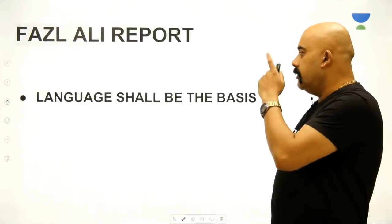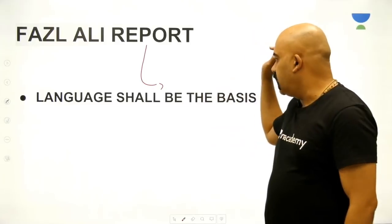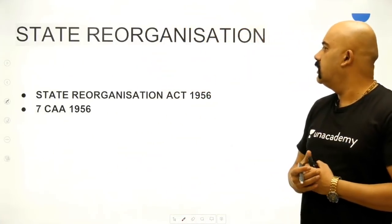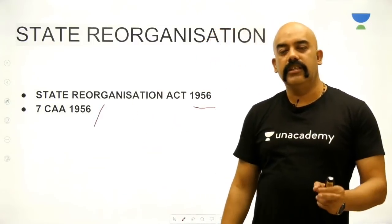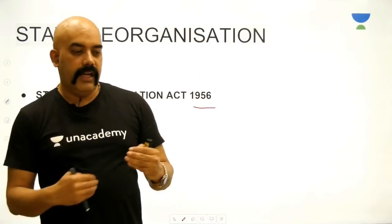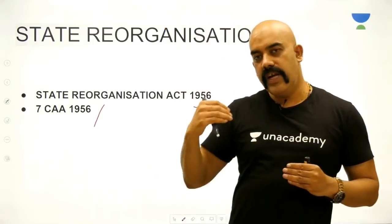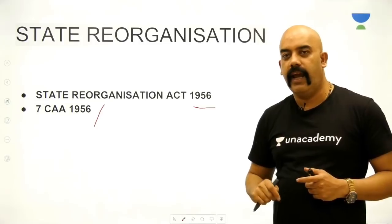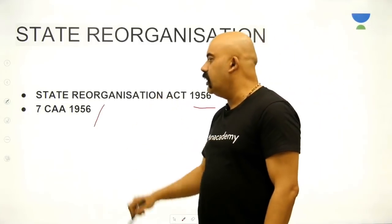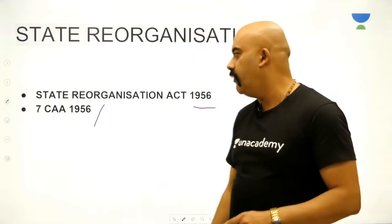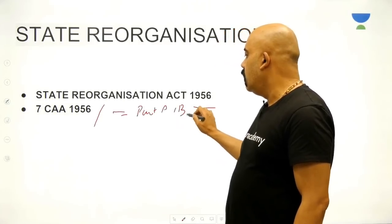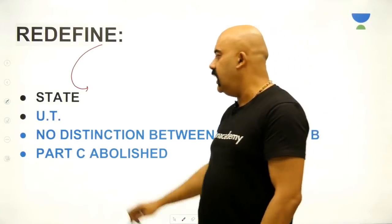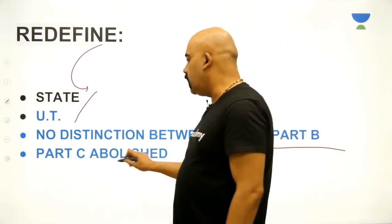The Fazal Ali Report finally concluded that language shall be the basis of state reorganization. This was 1955. In 1956, the States Reorganisation Act was passed along with the Seventh Constitutional Amendment Act. This completed the journey from Part A, B, C, D states to a linguistically reorganized India. The Part A, B, C, D classification was abolished — Part C was abolished entirely — and India was now divided into states and union territories on linguistic lines.